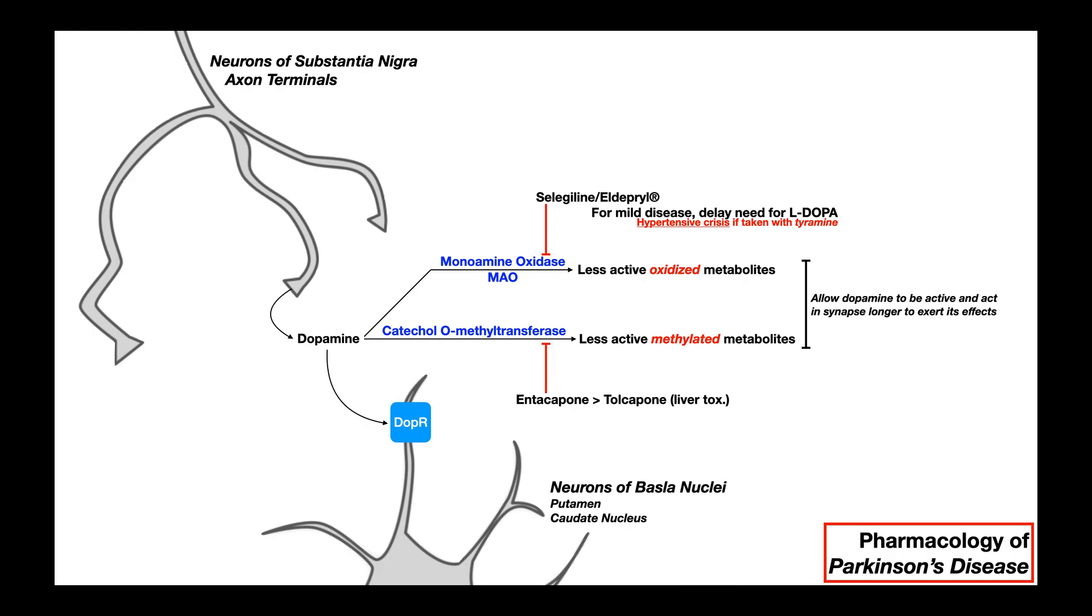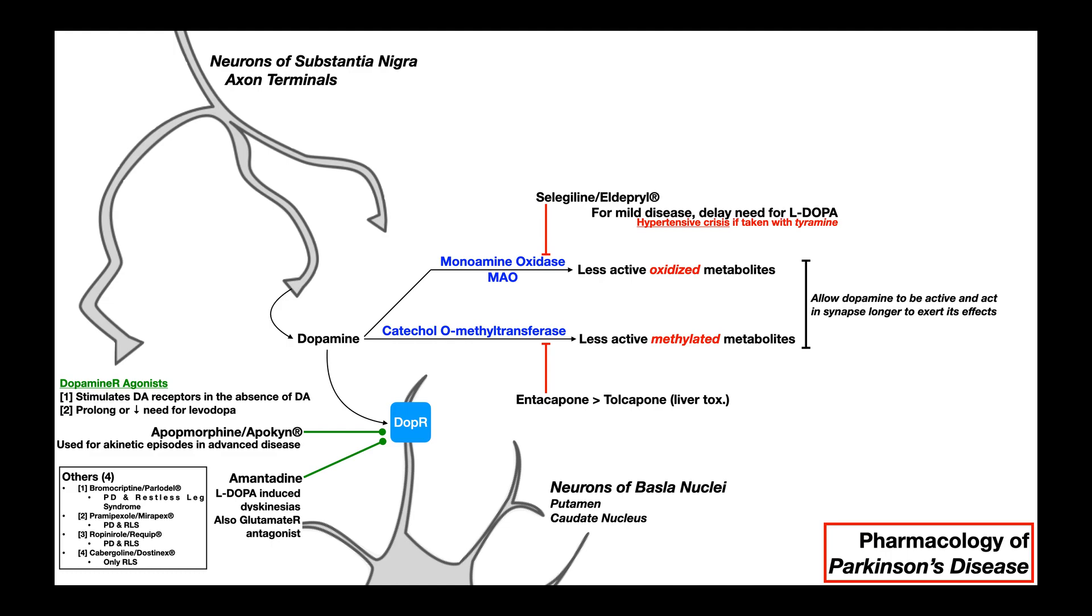Now these two classes of drugs, they both inhibit enzymes that would normally degrade dopamine. So by inhibiting them, they allow dopamine to be active and act in the synapse longer to exert its effects, which is beneficial for Parkinson's disease. There's another way that we can also stimulate dopamine function, and that's by actually stimulating the dopamine receptor on the postsynaptic cell, which belongs to the basal nuclei. These are going to be dopamine receptor agonists. In general, they're going to stimulate dopamine receptors even in the absence of dopamine. In some cases, they can be used as a first line of defense also to delay the need for L-DOPA. However, they're generally going to be used much later in the disease process when there's advanced disease and other issues like dyskinesias or akinetic episodes.